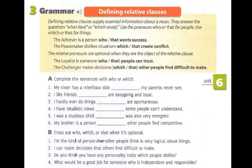Now we're going to go to the book on page 55. Last class we worked with vocabulary — we talked about character traits. Now we're going to do the exercises from page 55. The book only talks about defining relative clauses. Defining relative clauses supply essential information about a noun. They answer the question 'what kind?' or 'which ones?' We use 'who' or 'that' for people, and 'which' or 'that' for things.